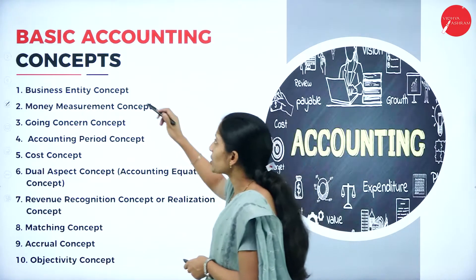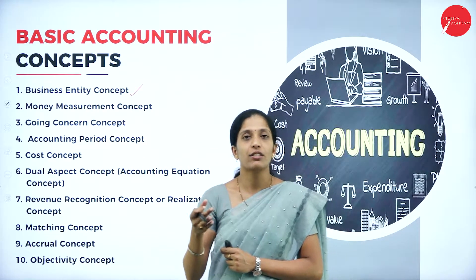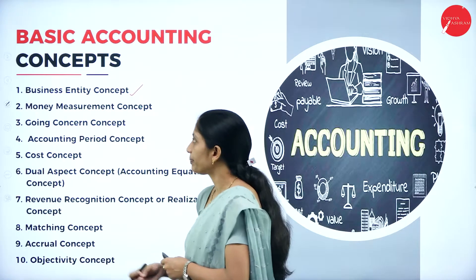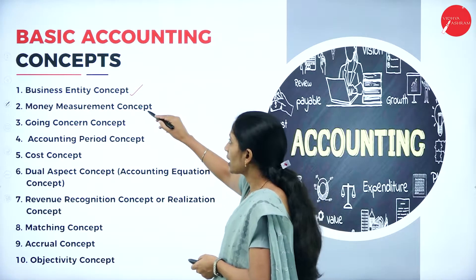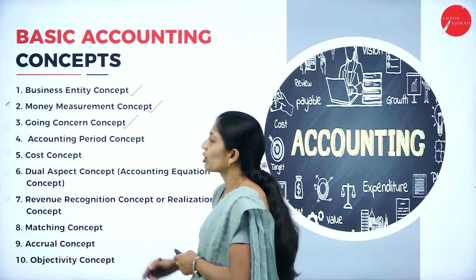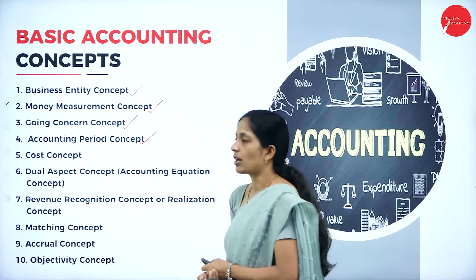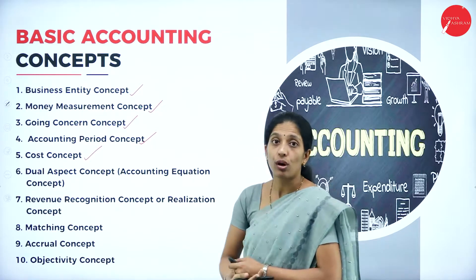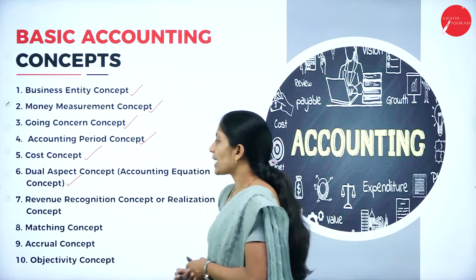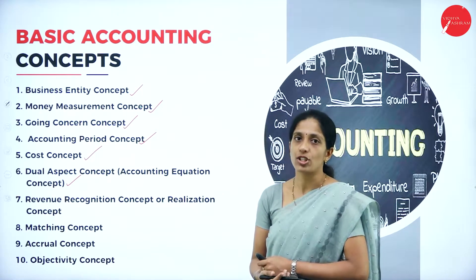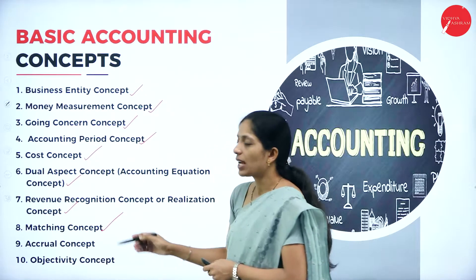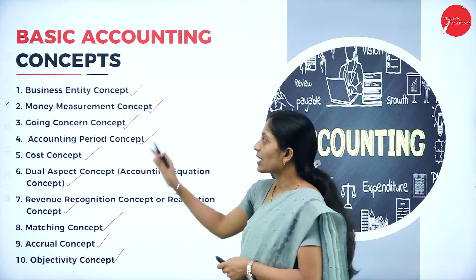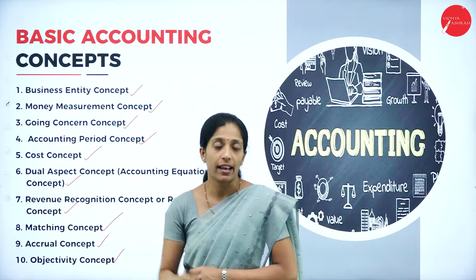The basic accounting concepts are: first, business entity concept; second, money measurement concept; third, going concern concept; fourth, accounting period concept; fifth, cost concept; sixth, dual aspect concept, also called accounting equation concept; seventh, revenue recognition concept or realization concept; eighth, matching concept; ninth, accrual concept; and tenth, objectivity concept. Let us see each concept in detail.